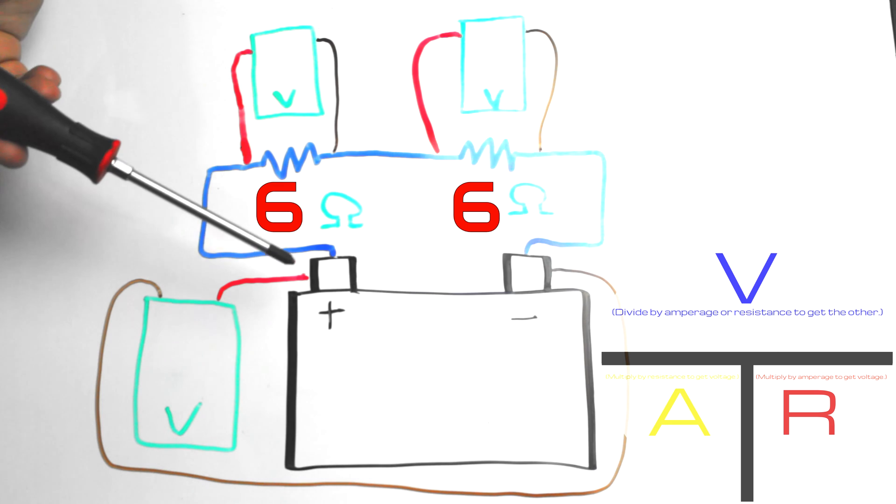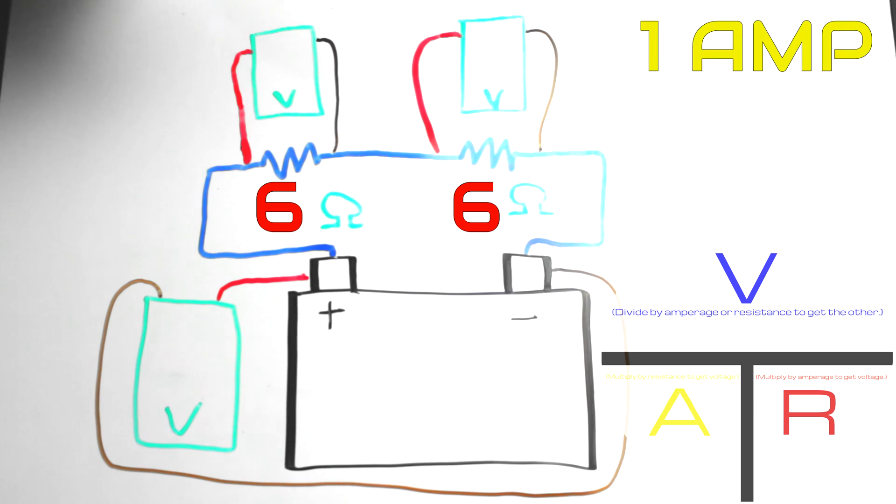We know from Ohm's Law that there's going to be one amp of current flowing through here. So amperage stays the same all the way through our circuit. But what about voltage?